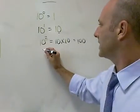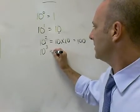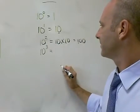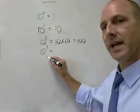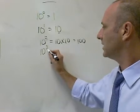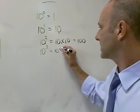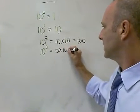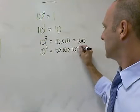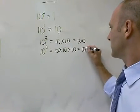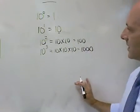Next in the pattern would be 10 to the 3rd. Again, 3 is our exponent, so we're saying 10 times 10 times 10, which equals 1,000.